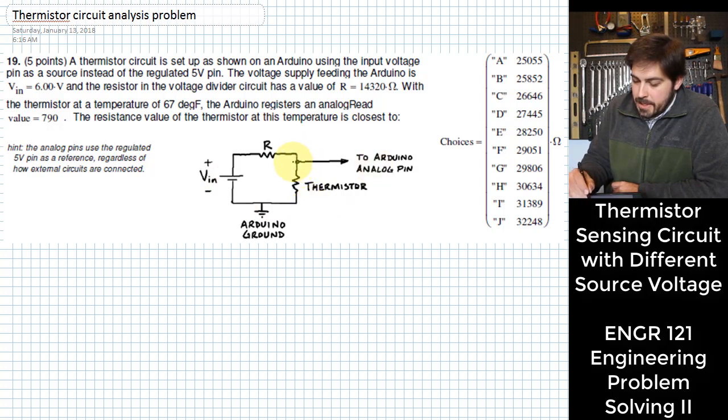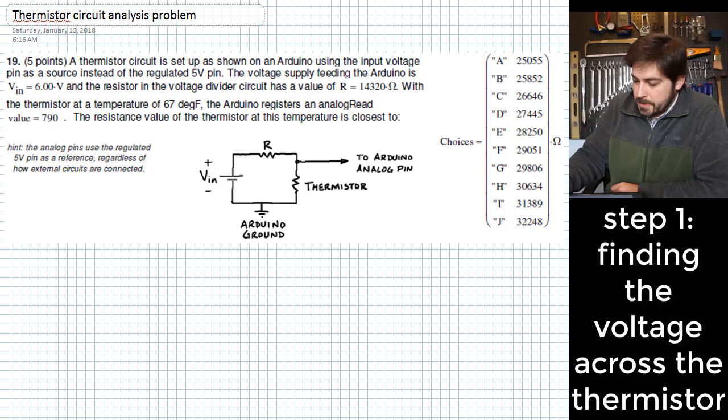At this location right here, the voltage is being measured, and it is being measured relative to the ground. When the Arduino makes that measurement, it uses the 5-volt regulated pin as the reference, regardless of what voltage is supplying the circuit. So the first thing we want to do is figure out what is the voltage that exists across this thermistor, and I'm going to put it right here and label it V sub T.